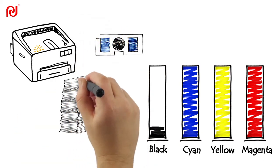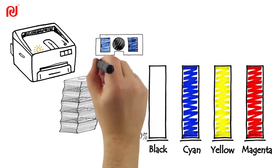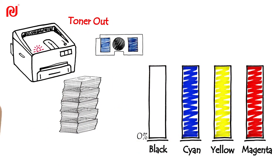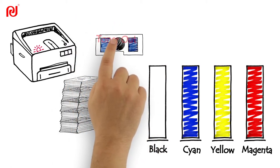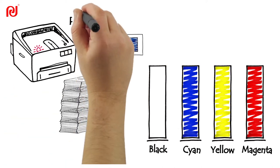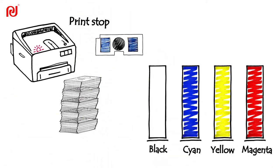As detected remaining capacity of consumable nearly reaches 0%, printer determines it as toner out, triggers the LED lighting red. An empty flag is also written into chip and thus the consumable is generally impossible to print normally. In a word, it's the printer that writes and updates data into consumables chip and not the other way around.